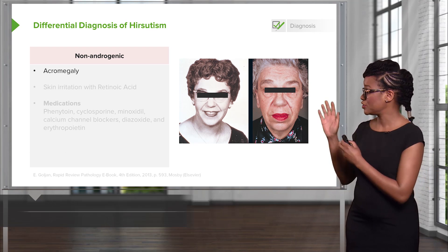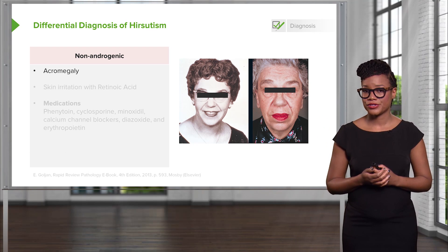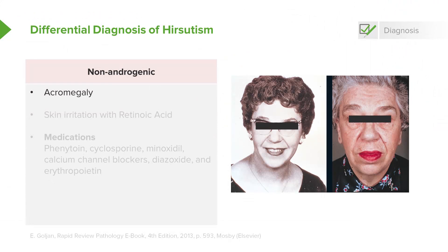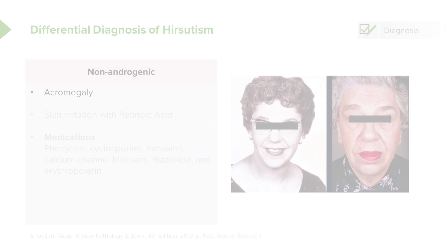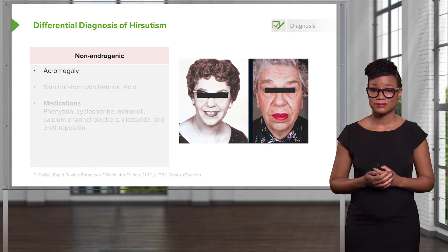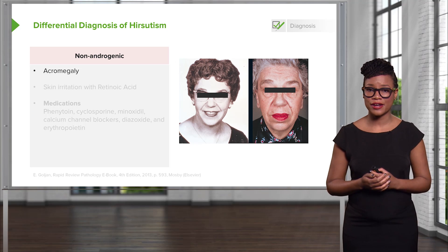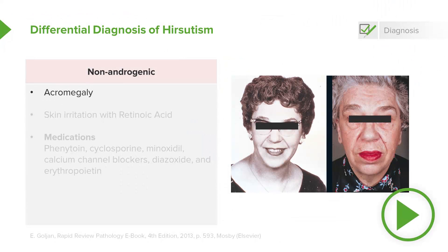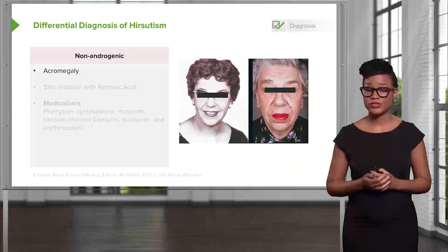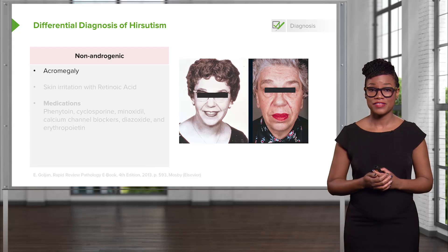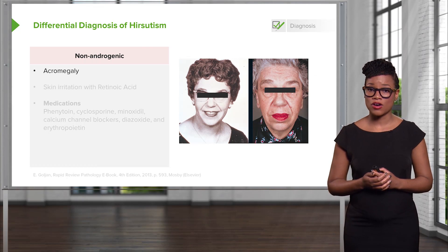Here I have a picture of a patient in her younger years versus her later years. Is there anything you notice about the patient besides her aging? Look closely at her features. If you said her features look coarse, then you're correct. This is very common with acromegaly, and this is a cause of hirsutism.